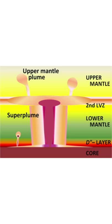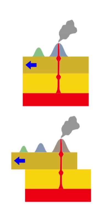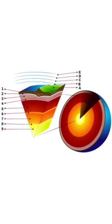Mantle plumes. It is the convection of abnormally hot rock — the magma — within the earth's mantle. Unlike the larger convection cells in the mantle, which change their position over geological time scales, the position of mantle plumes seems to be relatively fixed.